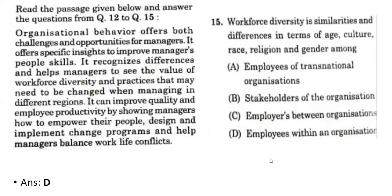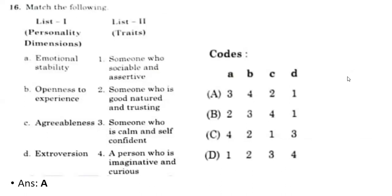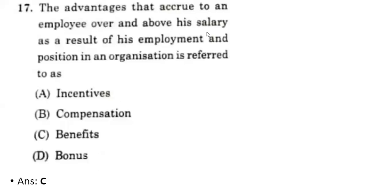Sixteenth question — match personality dimensions versus traits. The correct option is A: A is 3 — emotional stability is related to someone who is calm and self-confident; B is 4 — openness to experience is related to a person who is imaginative and curious; C is 2 — agreeableness is related to someone who is good-natured and trusting; D is 1 — extroversion is related to someone who is sociable and assertive.